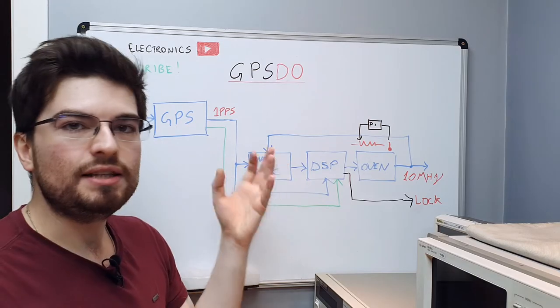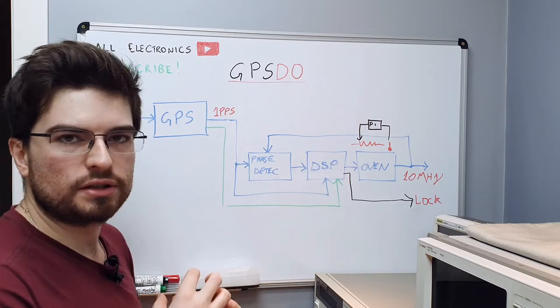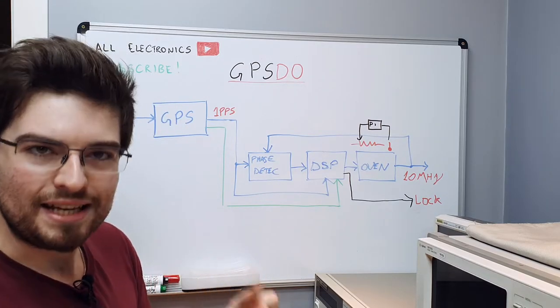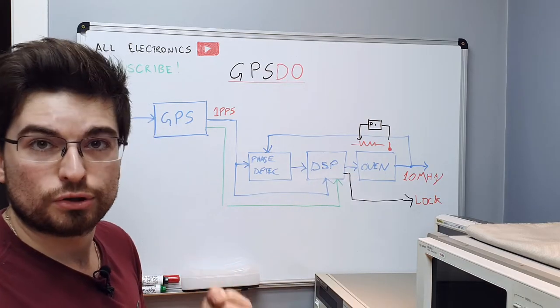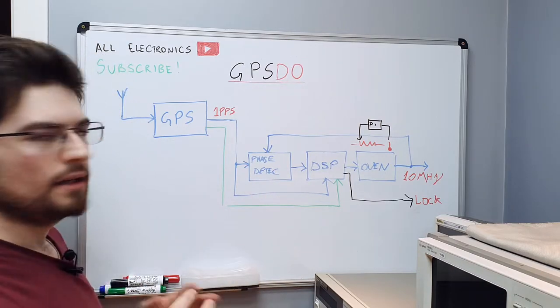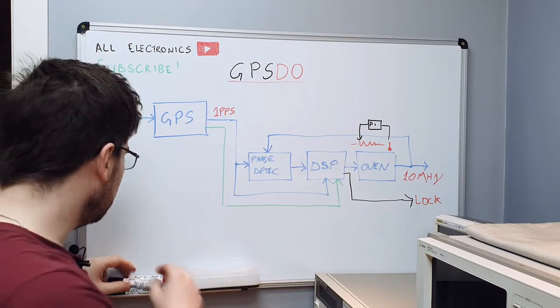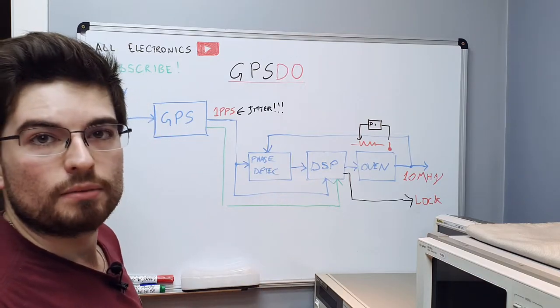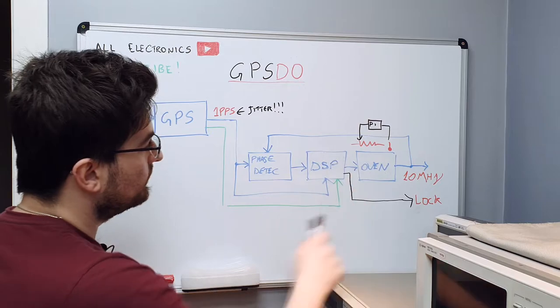With the DSP we can even use some sensors to measure the temperature of the outside world, the humidity and use these parameters to predict the oven characteristics and have a more precise controller. Other big problem that the DSP needs to solve is that these GPS modules here are not mean to that. So we have a lot of jitter here. With the DSP we can make some low-pass filtering and would increase the performance of this controller loop.